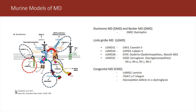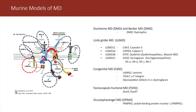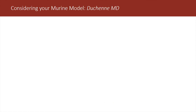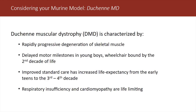Congenital muscular dystrophy involves separate proteins as well as proteins not represented in this graphic and transcription factors. FSHD and oculopharyngeal muscular dystrophy are listed because there are animal models for these muscular dystrophies as well. I want to cover some considerations of these murine models, starting with the most common muscular dystrophy — likely the most studied murine model — Duchenne muscular dystrophy.